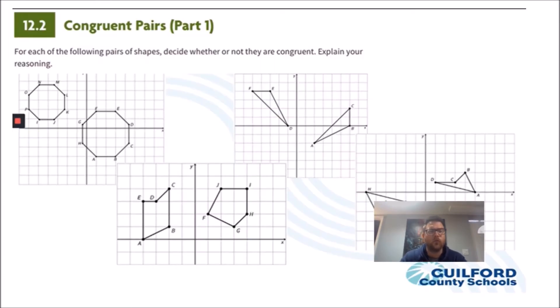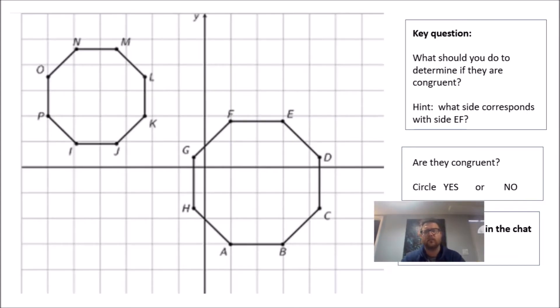Talking about congruent pairs. So for each of the following pairs, decide whether or not they are congruent. You have to look really closely at the side lengths. You have to look to see, for instance, let's look a little bit more closely at this image.